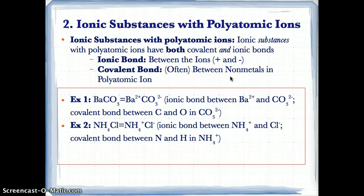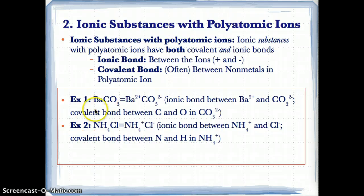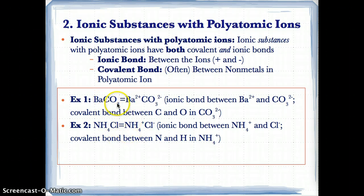The basic idea is that if you have an ionic compound with polyatomic ions, the compound always has both ionic and covalent bonds. To know what a polyatomic ion is, we can use reference Table E, which gives a list of polyatomic ions. Now let's try two examples. One example of an ionic substance with a polyatomic ion is BaCO3, which stands for barium carbonate.